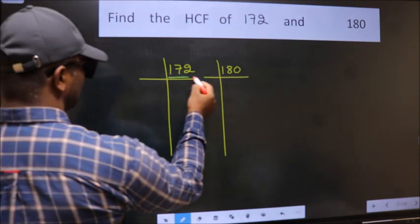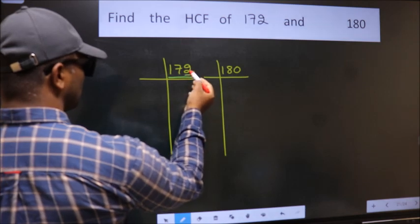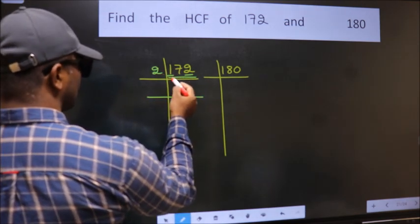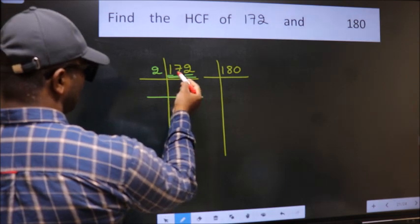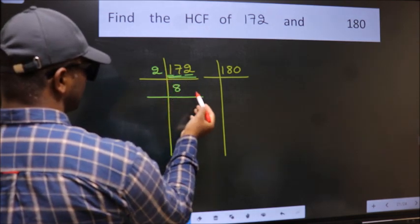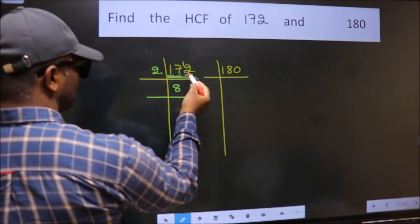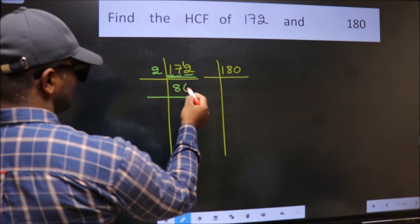In this number, last digit is even, so take 2. First number 1 is smaller than 2, so take two numbers 17. A number close to 17 in 2 table is 2×8=16. 17-16=1, 1 carried forward with 2 makes 12. When do we get 12 in 2 table? 2×6=12.